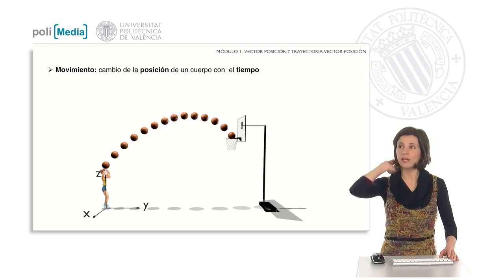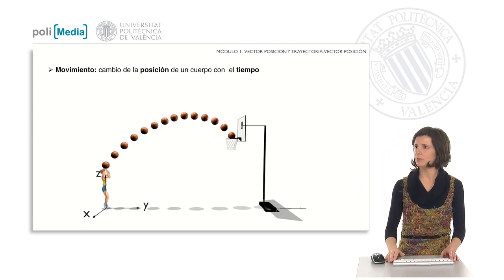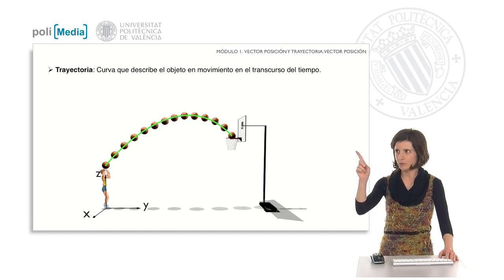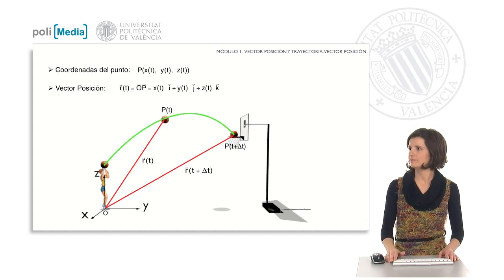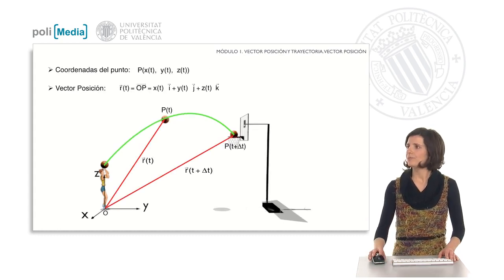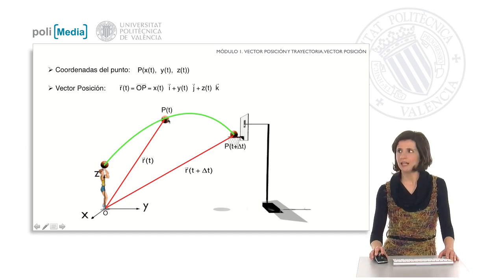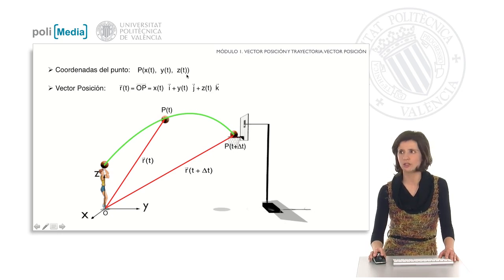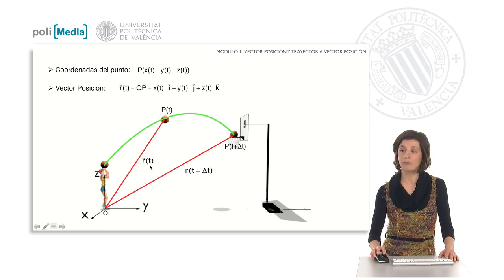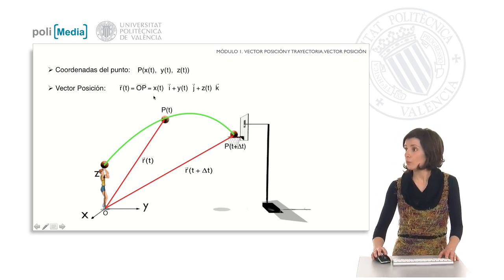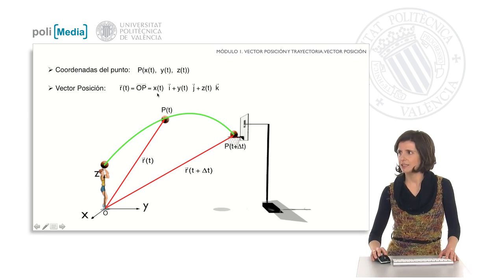But we must not forget that what we want to study is the motion of the ball over time. The curve described by the moving object in the course of time is called trajectory, and we have represented it in green. If we call P the point where the object is on the trajectory, we see that its coordinates depend on the time instant t. The position vector is defined as the vector that joins the origin of the Cartesian axis with the point P where the object is located, and we call it r. Its components, therefore, also depend on the instant t in which we are.